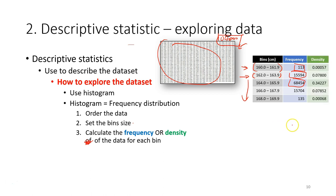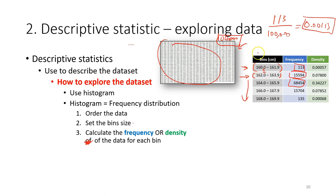We can also calculate the density. To calculate density: take the frequency (for example, 113), divide it by the total number of observations to get the proportion. Then divide that proportion by the bin size. The bin size here is 2 cm, so dividing gives 0.000565, which rounds to the density value. We calculate the density for each bin in this way.